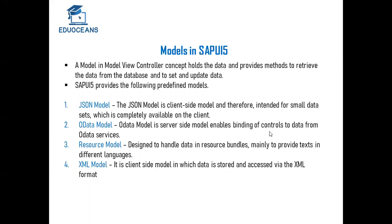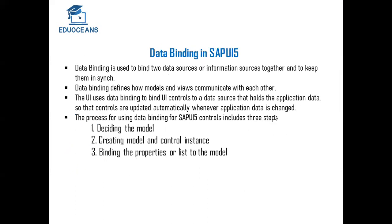Once the application is closed or ended, whatever data was stored in the JSON model or XML model will be freed — the resources are released. Both the JSON model and XML model are client-side models that hold data in the user's browser while the application is running. This is the general overview of models in SAP UI5.